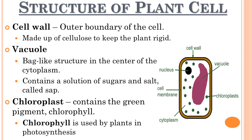Plant cells also contain another highly important organelle known as the chloroplast. Chloroplast contains a green pigment called chlorophyll, which is used by plants in the process of photosynthesis — where plants make their own food using sunlight. It is important to remember that unlike many animals, plants do not have a skeleton. They keep their shape because of the cell wall and cell sap present in vacuoles to keep the cells rigid.